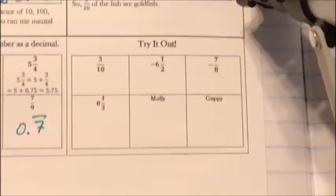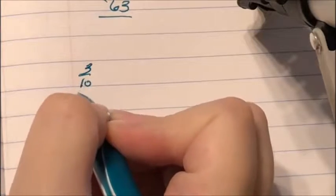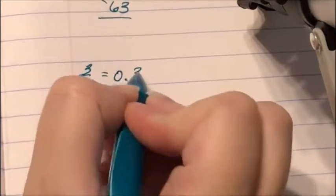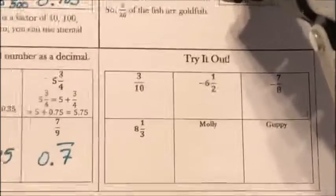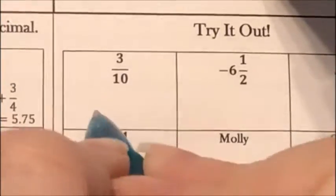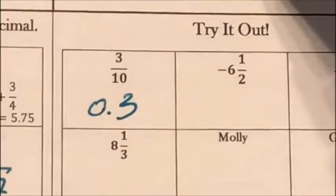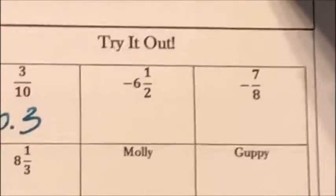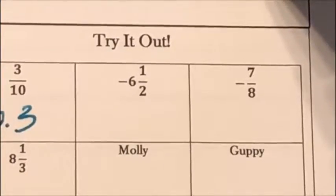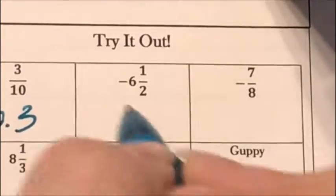A couple more try-it problems. For 3 tenths, I can easily recognize that as 0.3. For negative 6 and 1 half: 1 half is the same as 0.5, so the answer is negative 6.5.